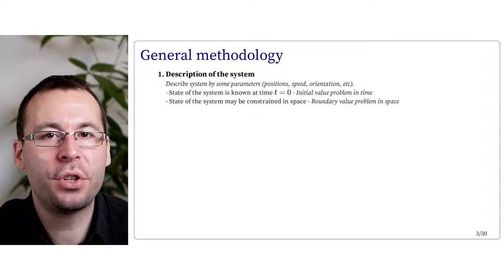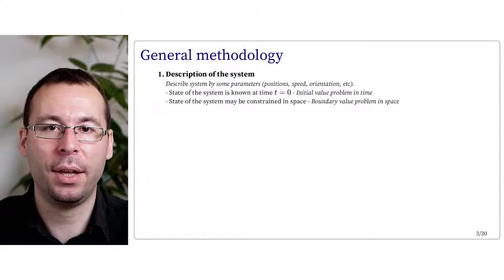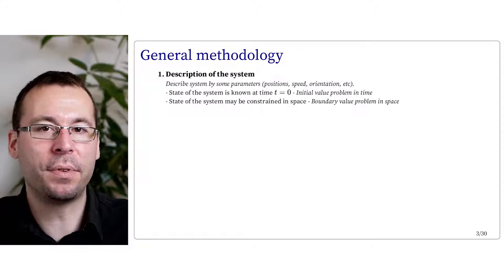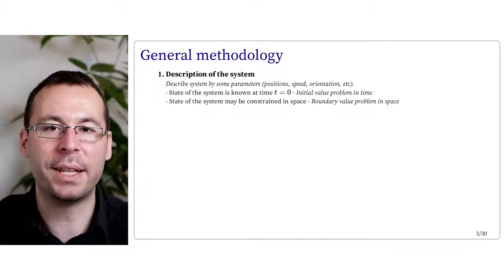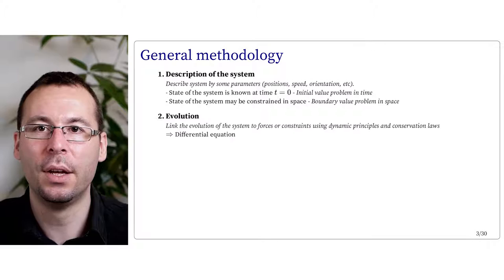The very general methodology of Physically-Based Simulation is always the same. First, you need to describe your system and your degrees of freedom — it can be the positions, the velocity, the orientation, and so on. The state of your system should be known at time t equals zero, and if you are dealing with a continuous material, you should also know the constraint in space as boundary conditions.